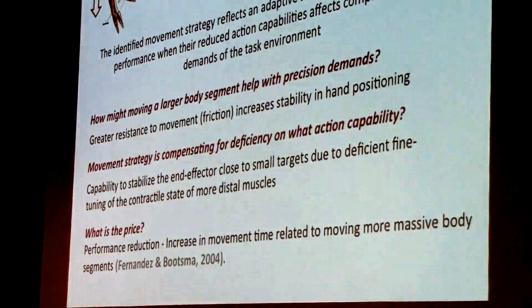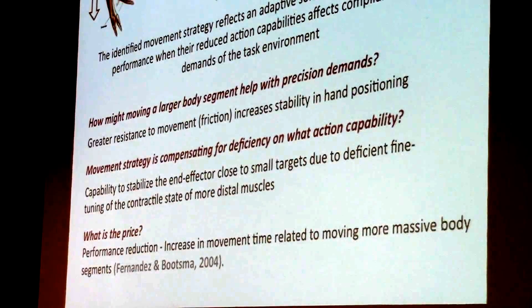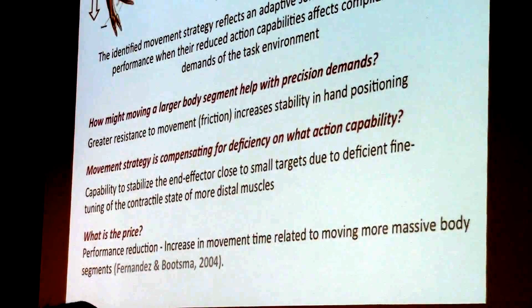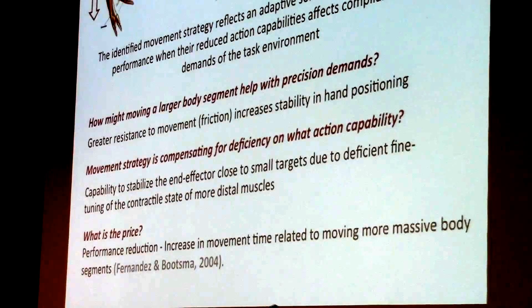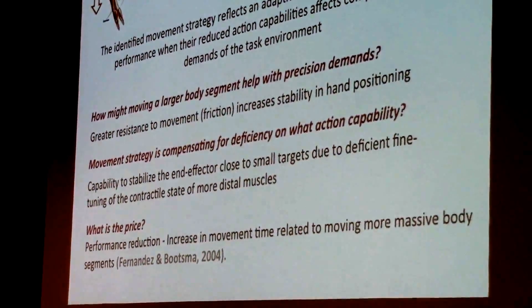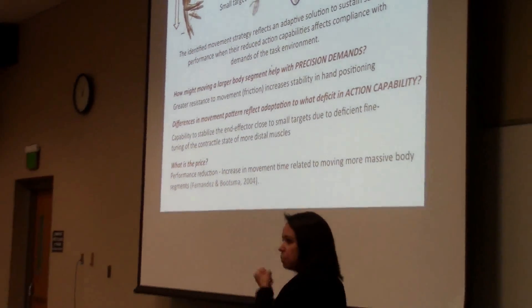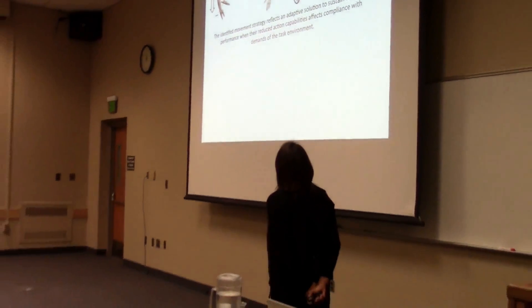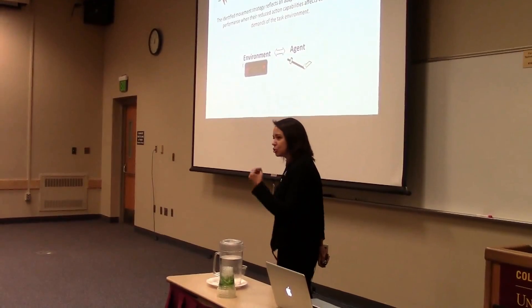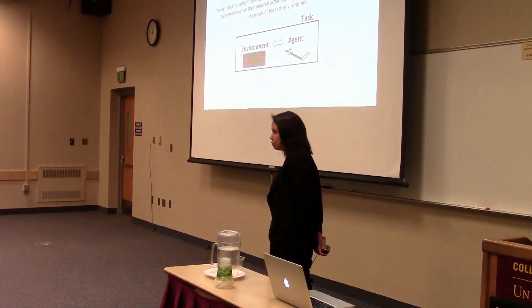So the price to pay here is performance reduction. Why? Simply because now you're moving more massive body segments. And this has been found in typical individuals also. When you're moving to target in directions where you have to recruit more massive body segments, you move slower. So that's the price to pay. But now if you want to improve performance, you can't just normalize the movement. You want to find a better balance between precision demands and action capabilities. So the argument here is that these strategies are actually improving the fit between environment and agent for task performance.